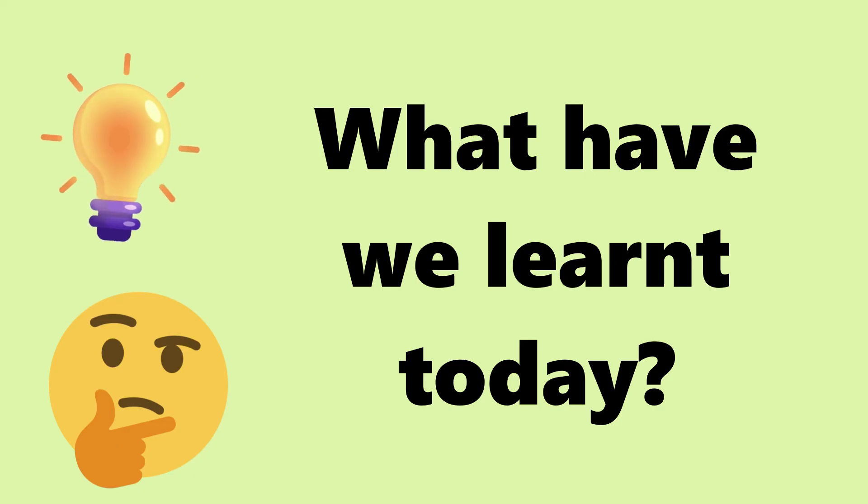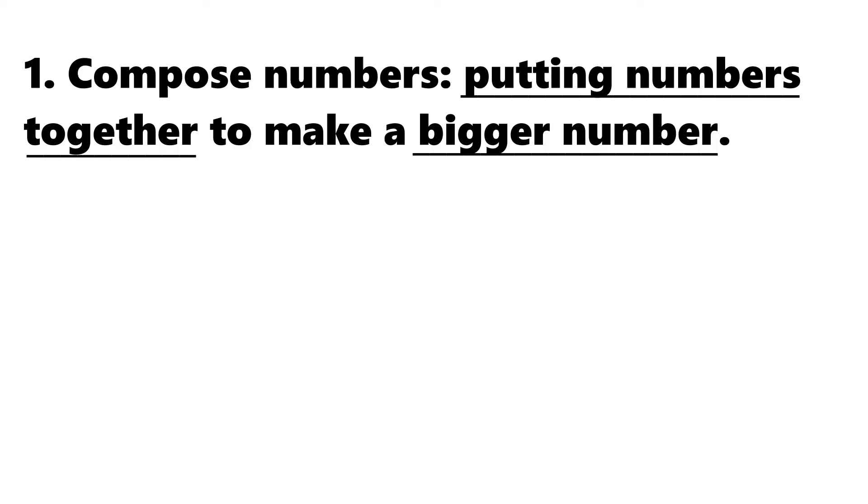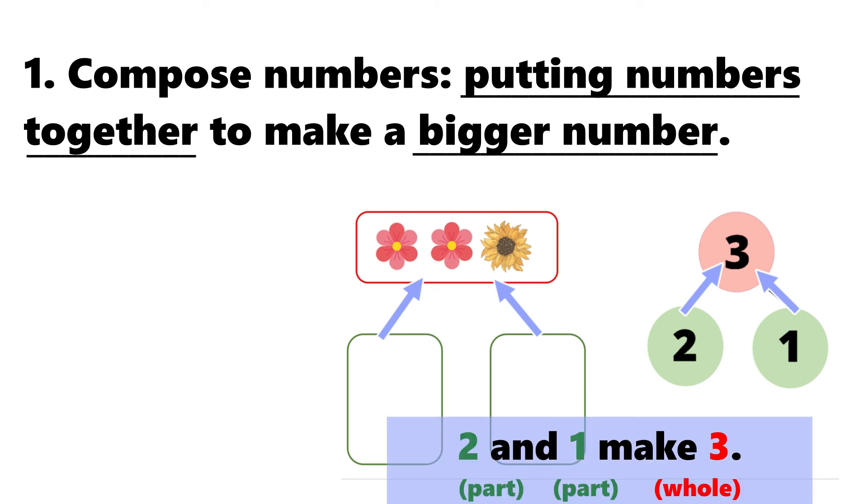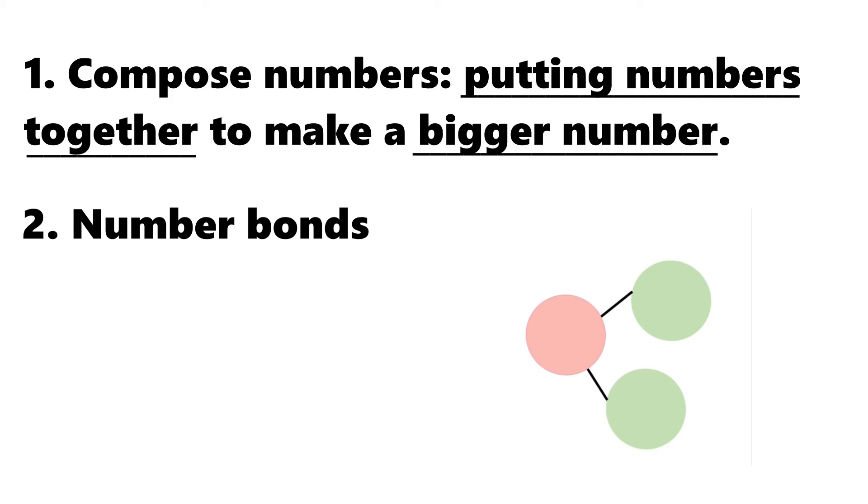What have we learnt today? We have learnt how to compose numbers. Putting numbers together to make a bigger number. We learnt to use the sentence structure. Blank and blank makes blank. Or part and part makes a whole. We use number bonds to help us.